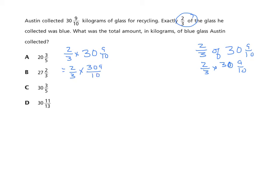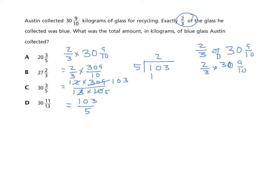I can simplify: three divided by three is one, and three hundred nine divided by three is one hundred three. Also, two and ten share a common factor of two, giving one over five. So now I have one hundred three over five. Dividing: five goes into ten twice, remainder zero; bring down the three — five doesn't go into three, so place a zero; remainder three. That gives twenty and three-fifths.